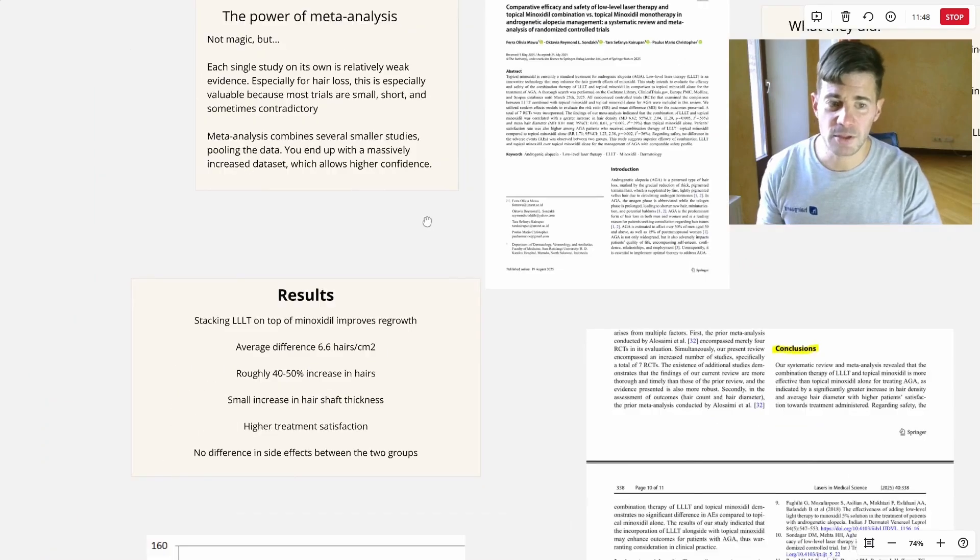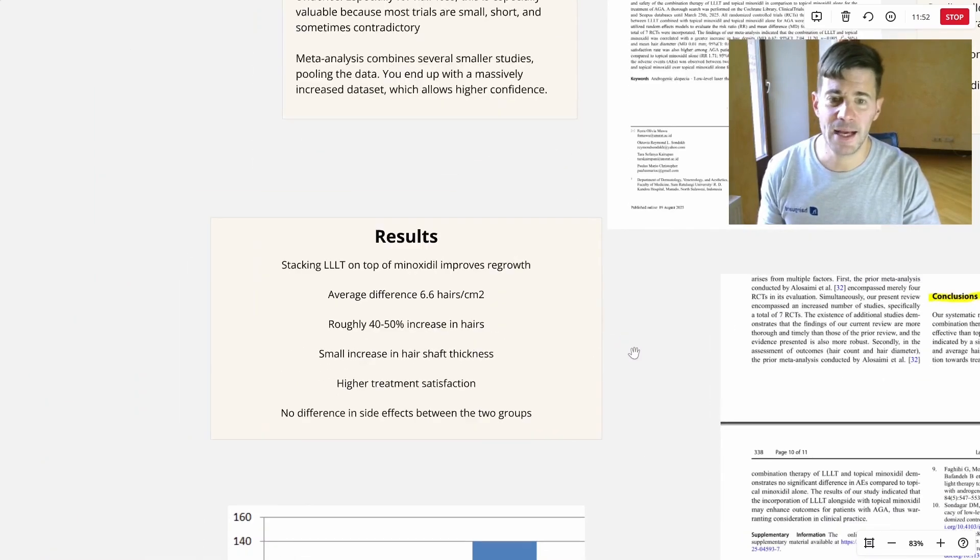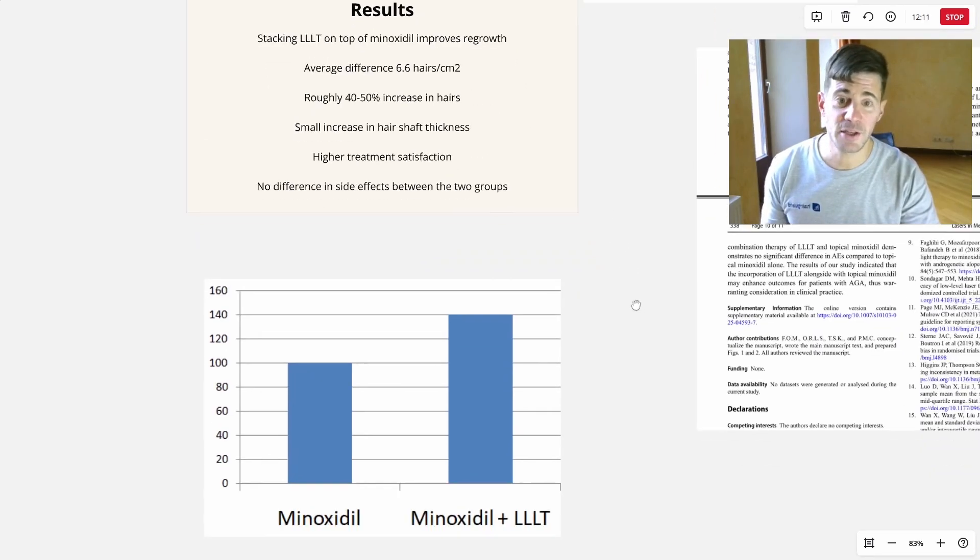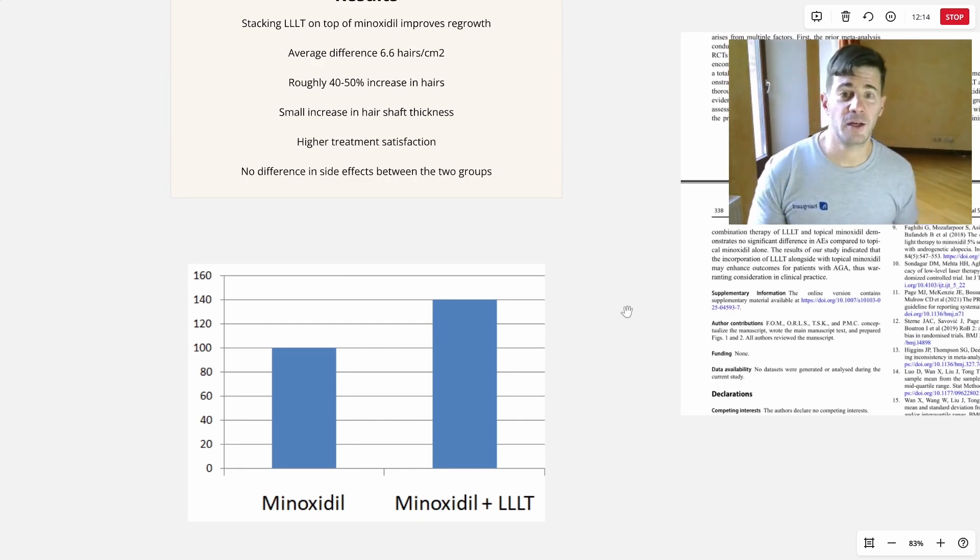And what were the results? Well, the results of the meta-analysis showed that stacking LLLT on top of minoxidil improves regrowth. And the average difference was 6.6 hairs per centimeter square. So 6.6 hairs over minoxidil monotherapy. And this was a roughly 40% to 50% increase in hairs, which you can see in the bar chart I've made for you here. And the researchers also found there was a small increase in the hair shaft thickness. In other words, the hair shaft diameter actually became a bit thicker on average, though this difference was very small.